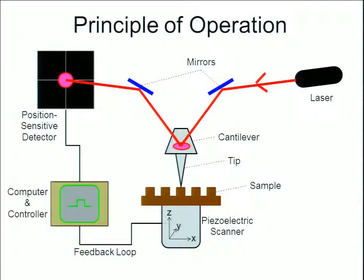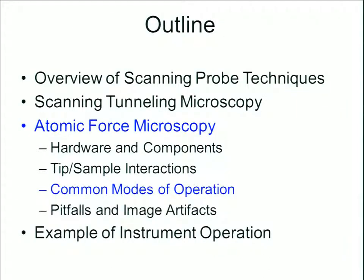We left off with a recap of the principle of operation for our atomic force microscope. These are the general components, which we discussed in substantial detail in the last lecture. So let's start this second lecture with some of the common modes of operation. Then we'll finish up with some pitfalls and common image artifacts, and also an example of instrument operation.